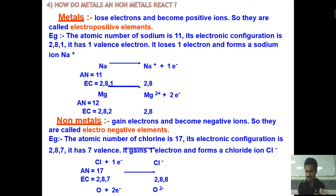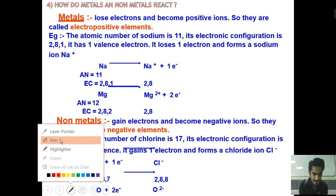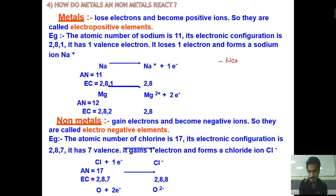So generally, metals lose electrons — they donate electrons — and form positive ions. For example, sodium donates the electron from its last orbit and is therefore considered a positive ion.